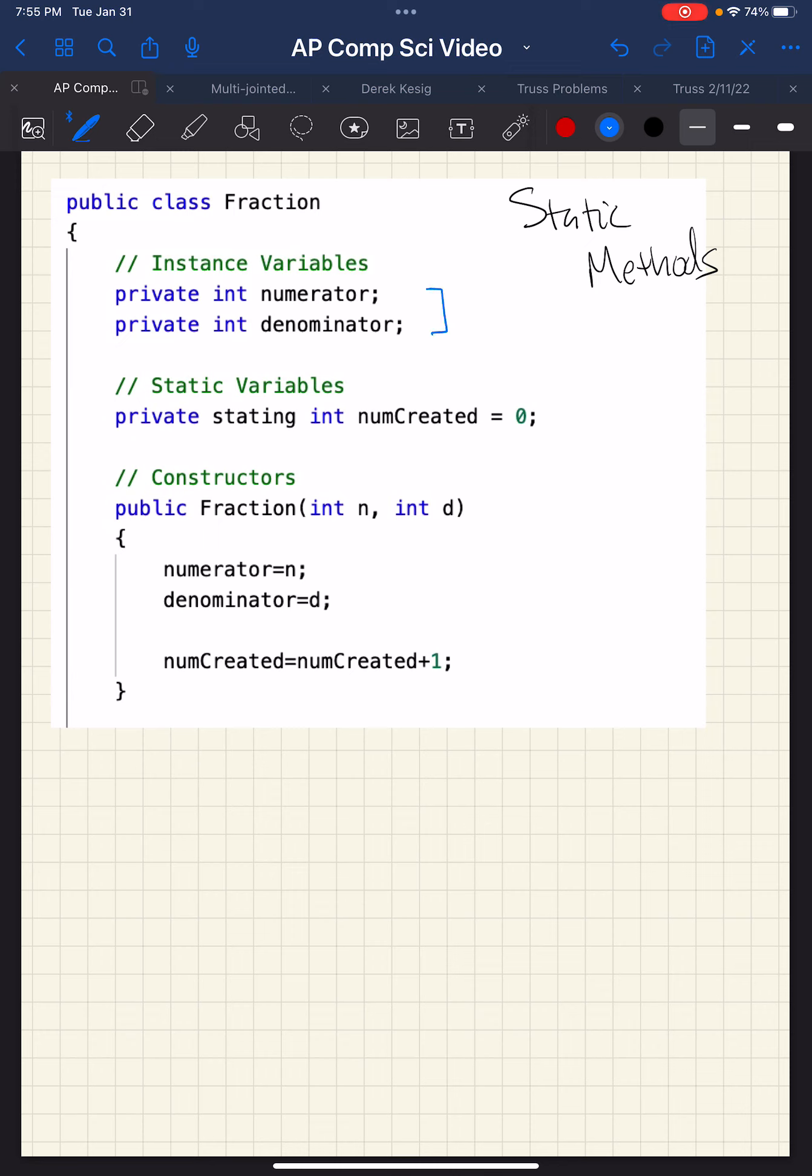They're private instance variables. So we can say things like fraction A equals new fraction 3,4. And that will create the fraction 3 fourths. It assigns numerator value 3 and denominator value 4. You can see that right down here in the constructor.